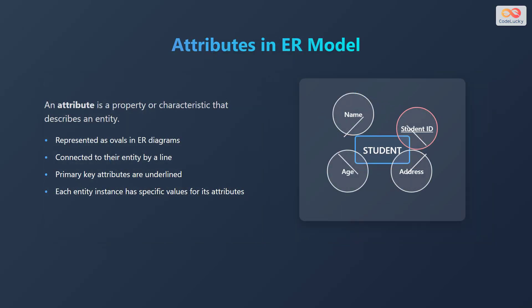An attribute is a property or characteristic that describes an entity. Attributes are represented as ovals in Entity Relationship diagrams, connected to their entity by a line. Primary key attributes are underlined. Each entity instance has specific values for its attributes — for example, a student entity has attributes like name, student ID, age, and address.